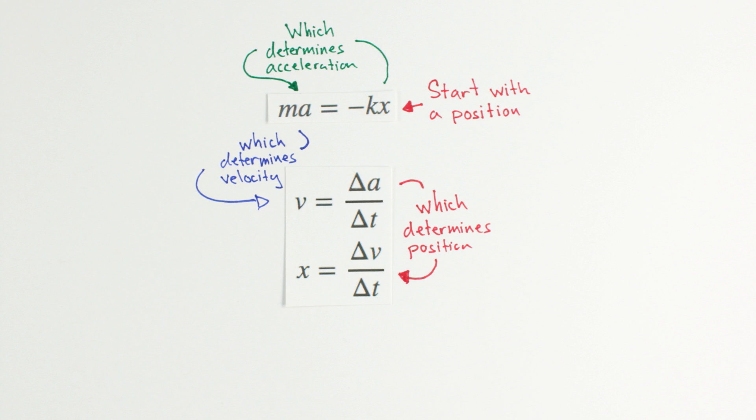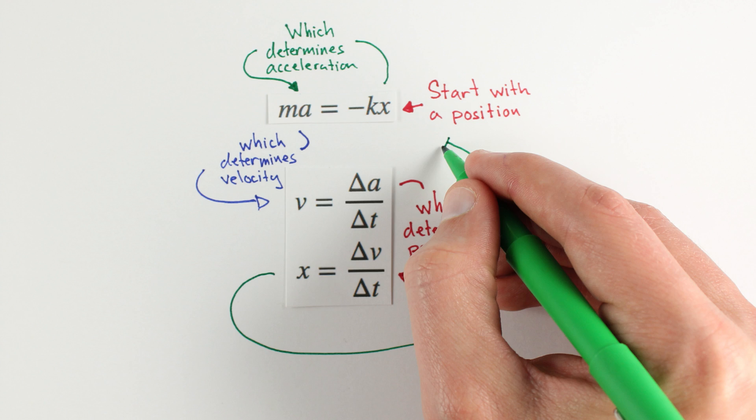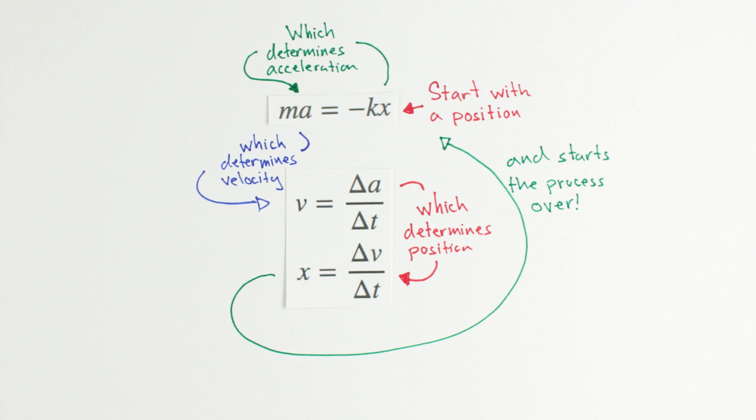Once our mass gets to the next spot, since the acceleration and position are changing, we need to repeat the process, again asking our equations where they predict the mass will go next.